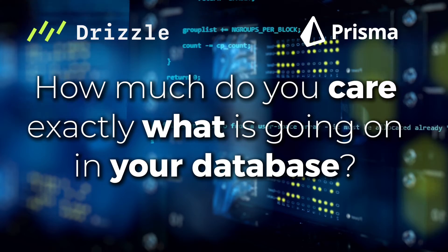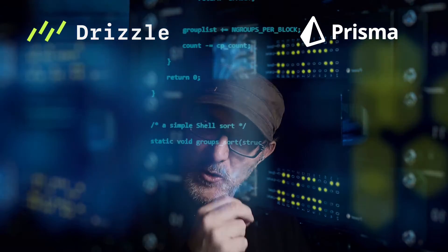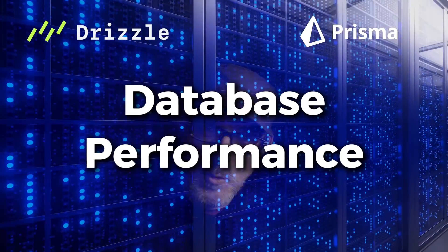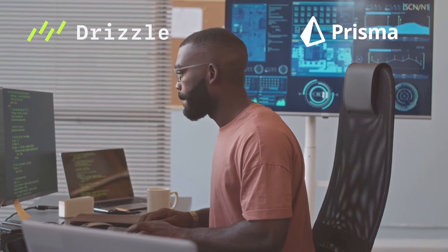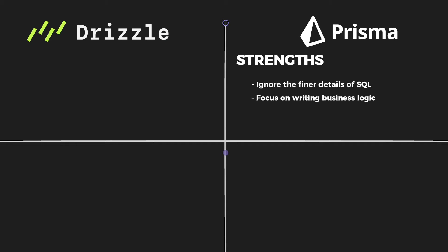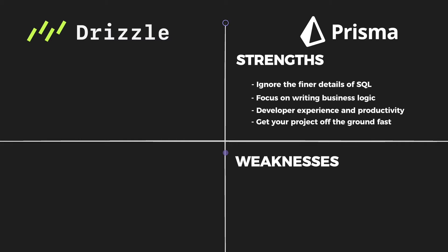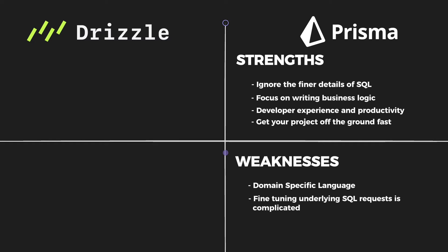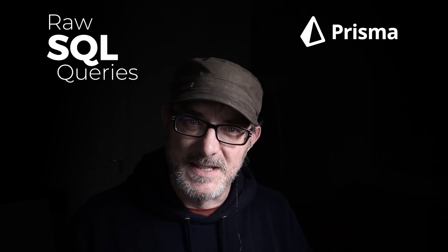The question, perhaps, is how much do you care exactly what's going on in your database? Or, does your application's success depend on database performance, or on development velocity and iteration speed? For example, Prisma means you can ignore the finer details of SQL and focus on writing business logic code — it favours developer experience and productivity, and is a great tool to help you get your project off the ground fast. However, Prisma means you need to learn the domain-specific language, although there is a VS Code extension to help. The DSL means fine-tuning the underlying SQL requests is more complicated, making database performance issues difficult to debug. Prisma does allow you to write raw SQL queries, but at the cost of the type safety that the DSL and Drizzle provide natively.